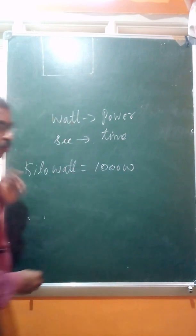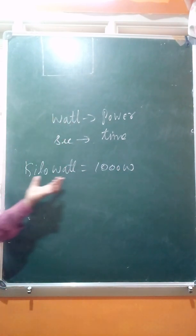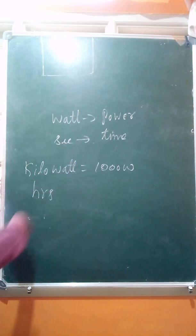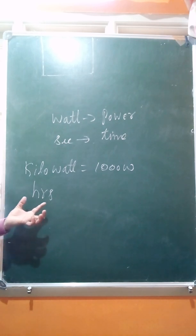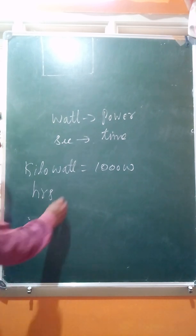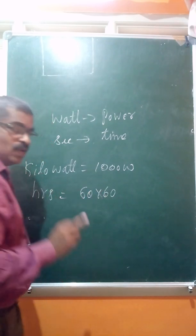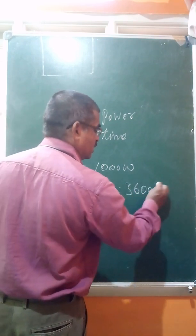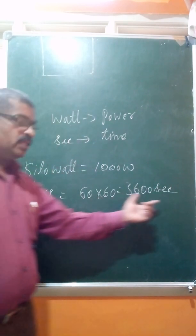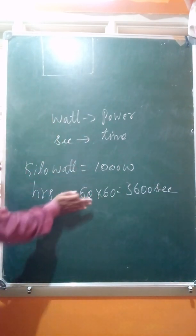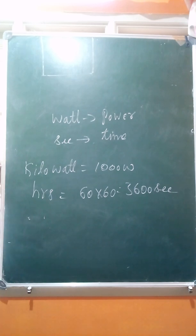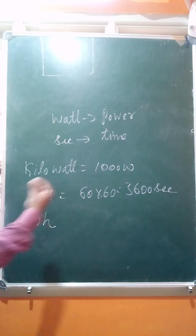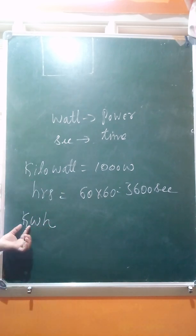One Kilowatt equals one thousand Watts. For time, instead of seconds we use hours to get a bigger value. One hour equals 60 minutes, and one minute equals 60 seconds, so one hour equals 3600 seconds. The commercial unit of energy is therefore Kilowatt-hour.